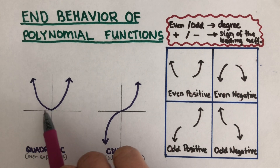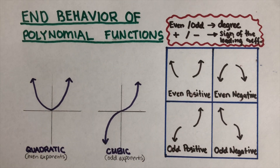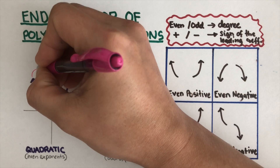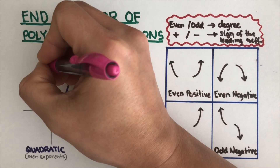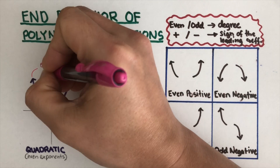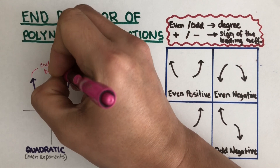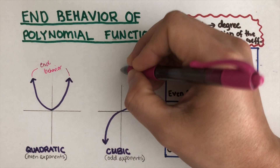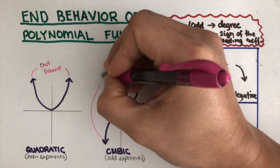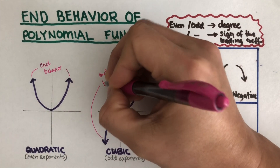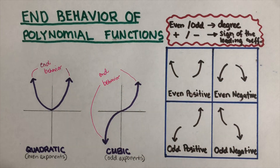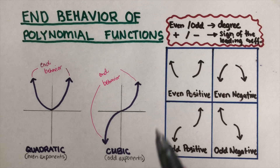It either resembles a quadratic or it resembles a cubic. When we say end behavior, we're talking about the very end of the graph — where is it directed to? In this problem, these are what we call the end behavior. This section is going to talk about the end behavior of every polynomial function.